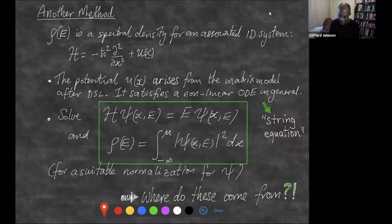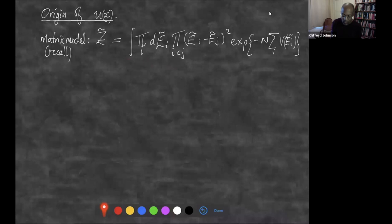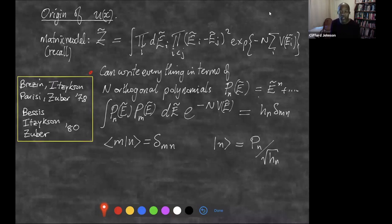All you have to do is solve the spectral problem of this Hamiltonian and construct the spectral density — for a suitable normalization of psi — and you're done. That rho will be the rho we're looking for. To explain where these things come from, let's go back to the double scaled matrix model. Where does u come from? Where does x come from? Going back to the 70s, you can actually write the matrix model in terms of a family of N orthogonal polynomials, orthogonal with respect to the measure e^{-V} of the matrix model.